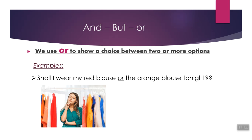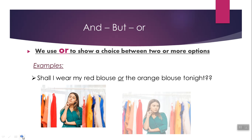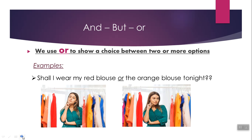Now, 'or'. It was confusing for you. When do we use 'or'? We use 'or' to show a choice between two or more options. For example: Shall I wear my red blouse or my orange one tonight? Or: Shall you go to the movies tonight or stay home? So we have two options — going to the movies or staying home. So we use 'or'.